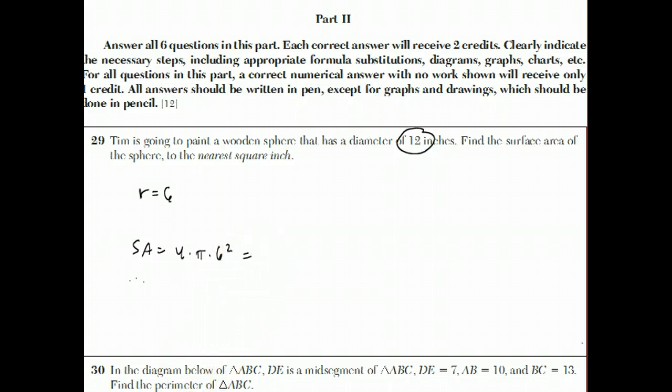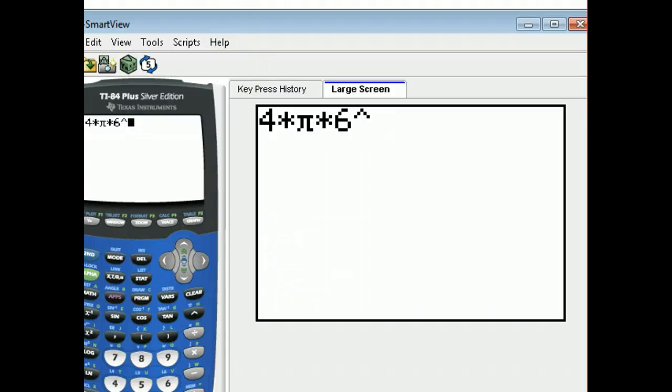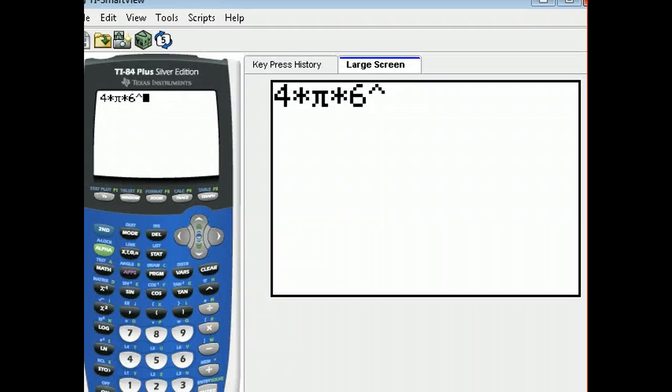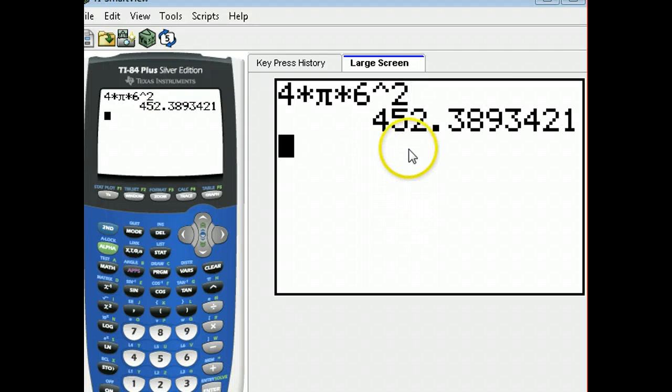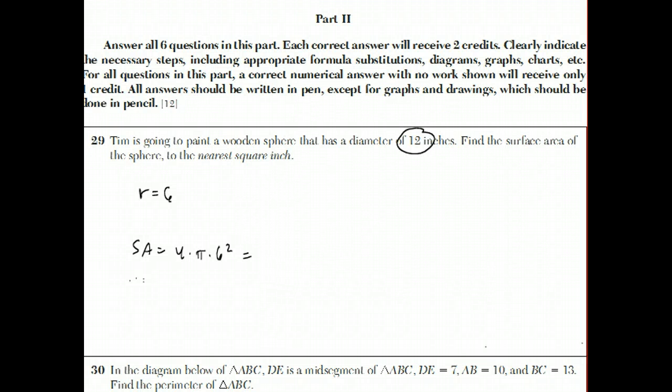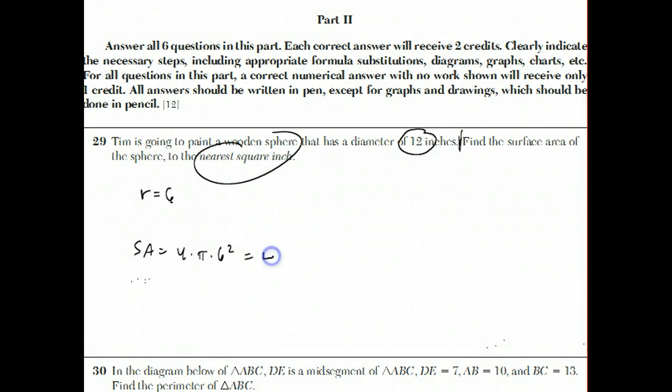The formula says it's 4 pi r squared, which is 4 times pi times 6 squared. And then throw that into the calculator. So the answer is 452.38. Looking at the answer choices, they want it to the nearest square inch, which is 452.4 square inches.